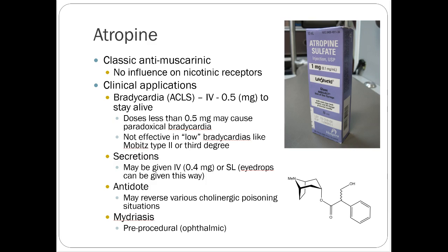Atropine is the classic anticholinergic — it has no influence on nicotinic receptors and is purely anti-muscarinic. Clinical applications include acute bradycardia: for people in unstable bradycardia, you can give a small dose of 0.5 mg. It comes in premade syringes for emergency use. We'll talk more about this during emergency medicine and you'll learn about it in ACLS next summer. The key thing to remember is that atropine is used acutely to treat bradycardia in some situations.